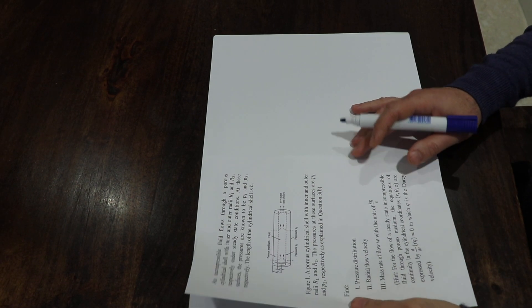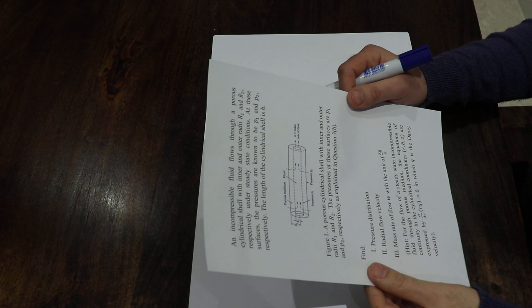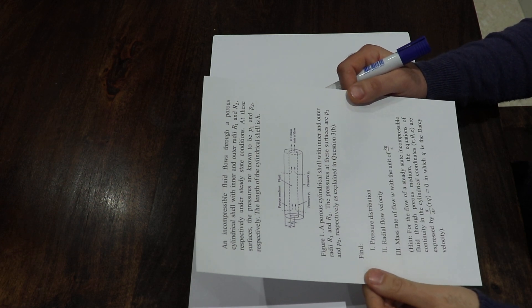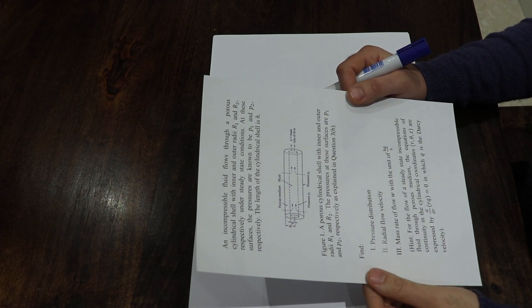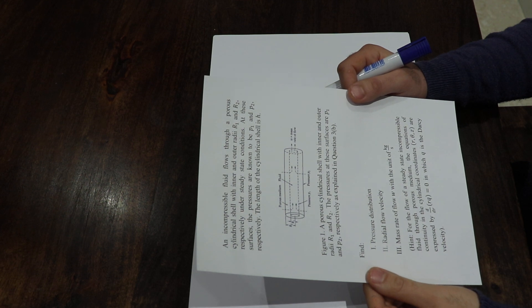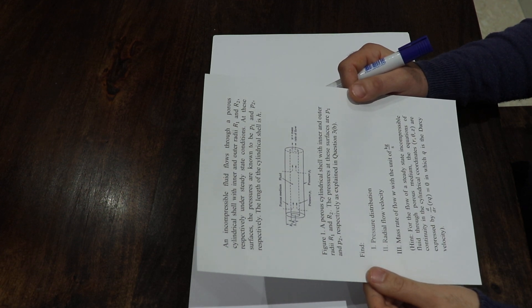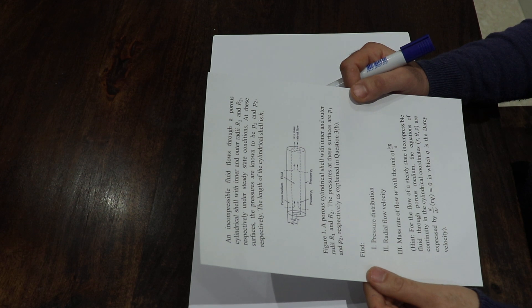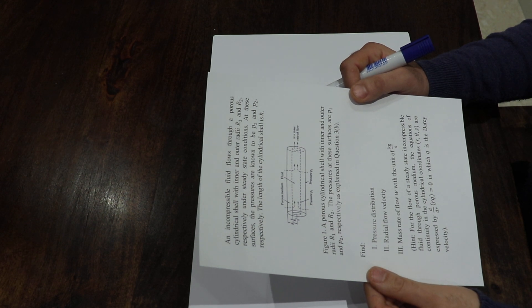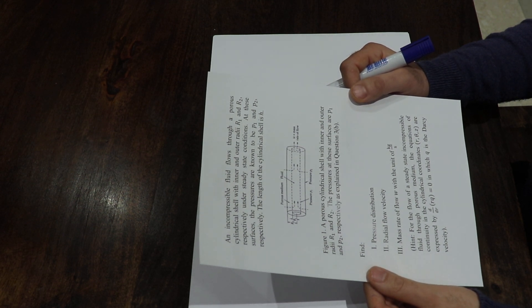Hello, this question is about Darcy's law. The question is: an incompressible fluid flows through a porous cylindrical shell with inner and outer radii R1 and R2 respectively under steady state conditions. At these surfaces the pressures are known to be P1 and P2 respectively. The length of the cylindrical shell is h.